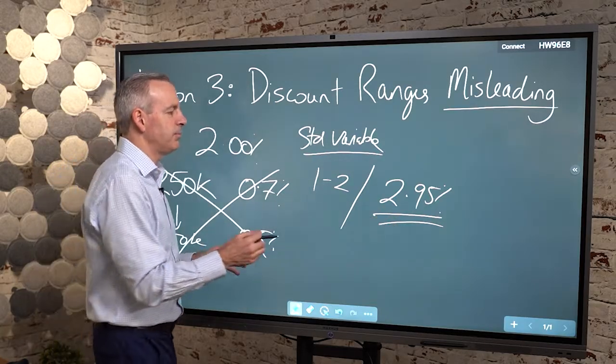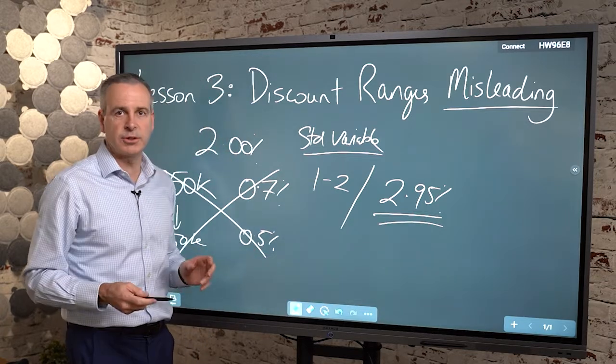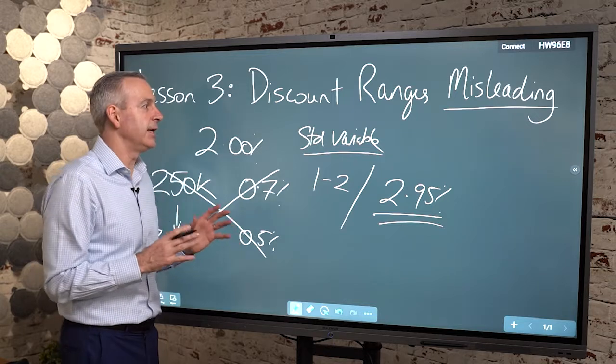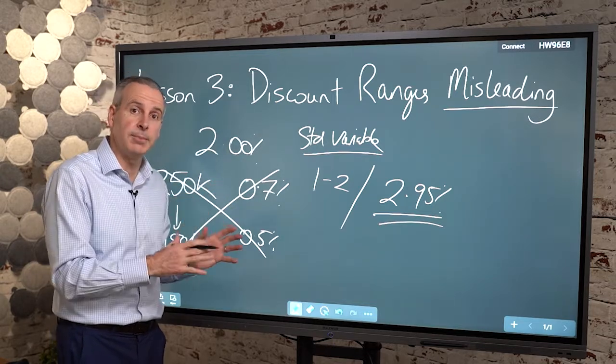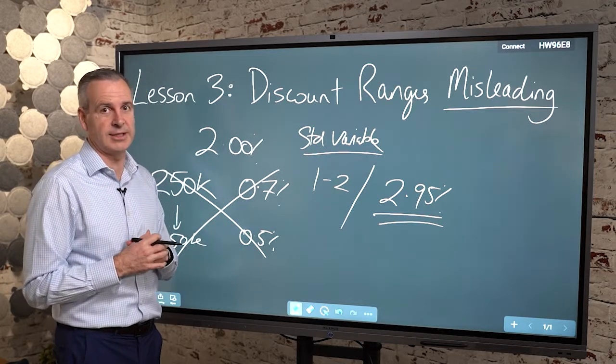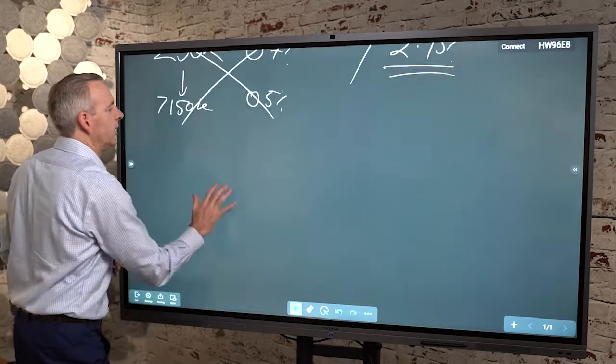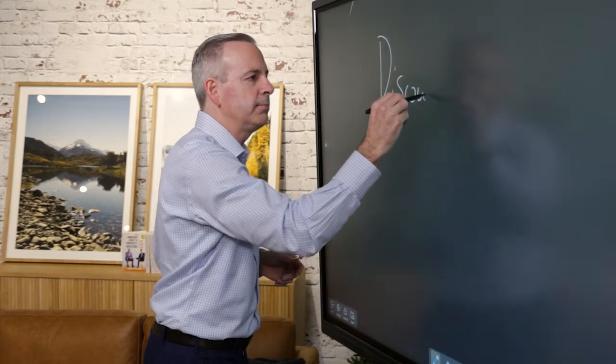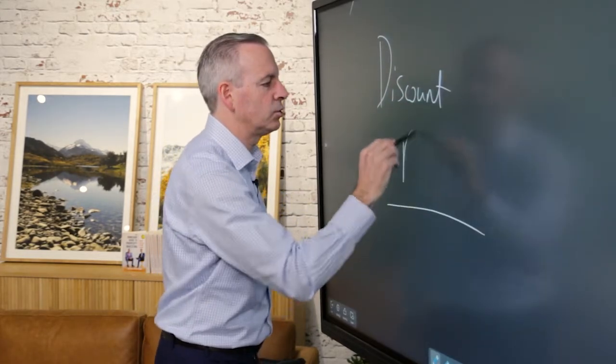My point being is, if people are telling you at their barbecues or at the catchups or the dinner parties, I've got a 2.95% discount off my loan, it's misleading. Because if CBA in the example that we use has a significantly cheaper standard variable rate than what the Bank of Melbourne are saying in terms of their standard variable rate. So the message here is really simple. It's not so much about the discount. The discount is important, but it's really about the ultimate rate that you're going to pay.